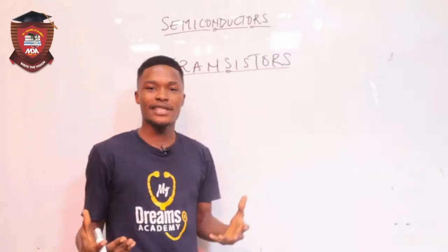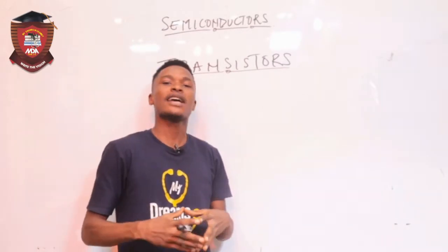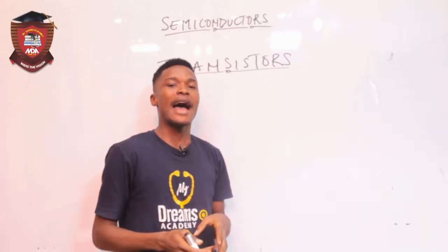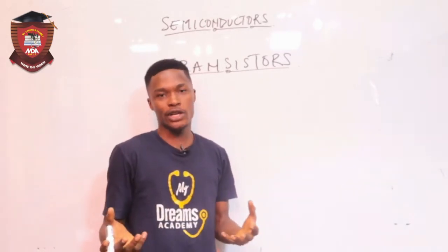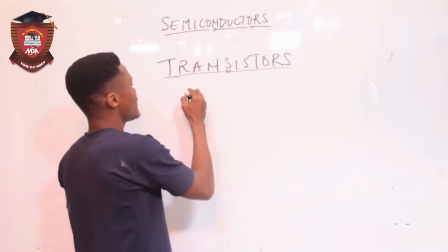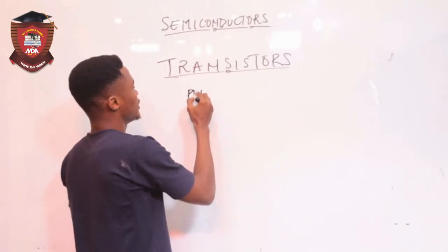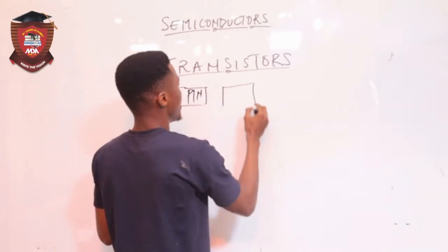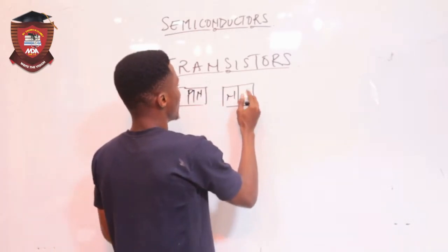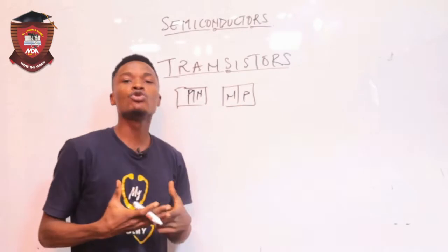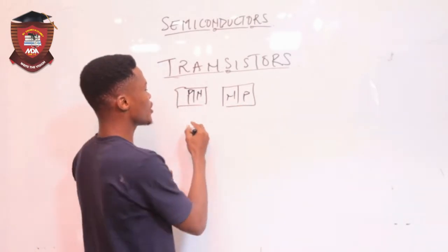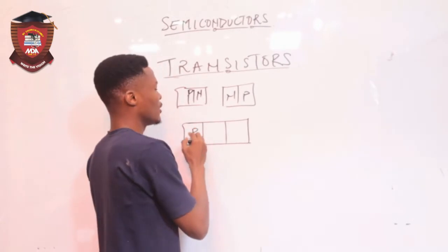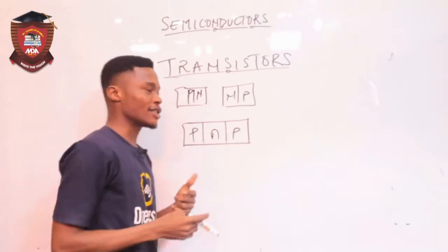Transistors are electronic components. They are produced by joining two PN junctions. So when you have two PN junctions — a PN junction here and another PN junction — if you join them together, you produce a single semiconductor material which we call a transistor.